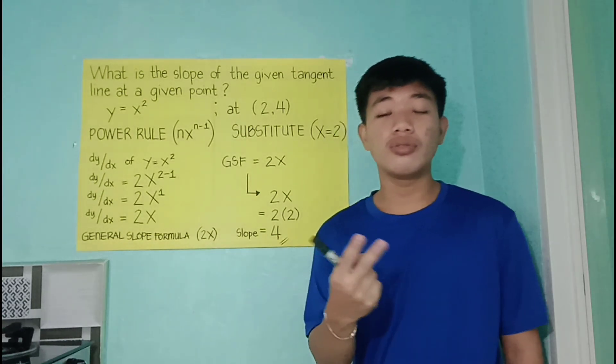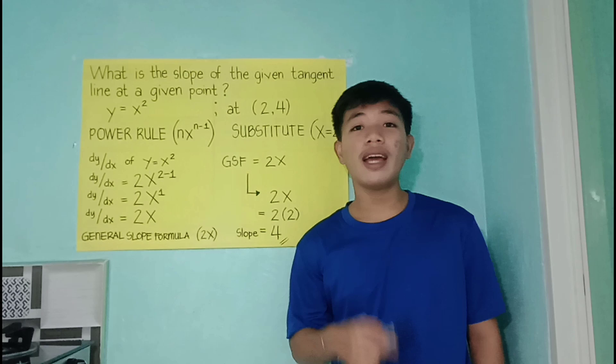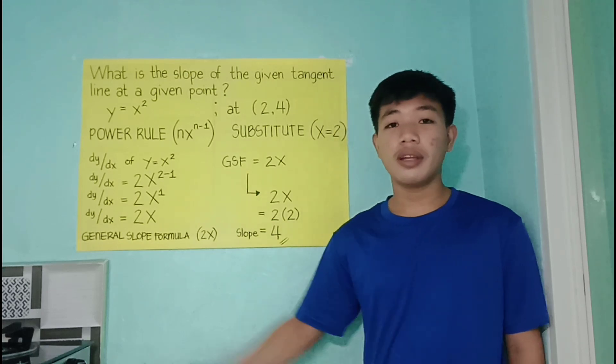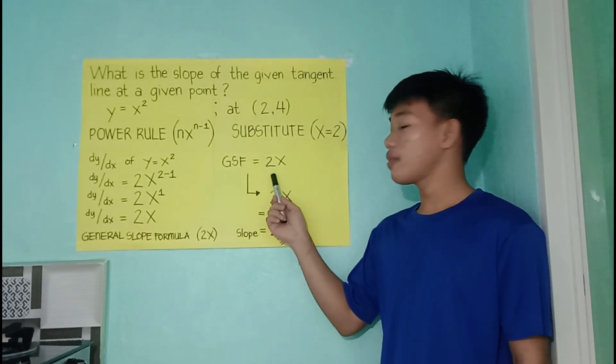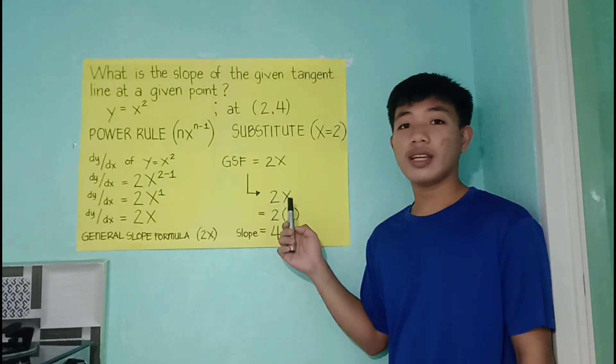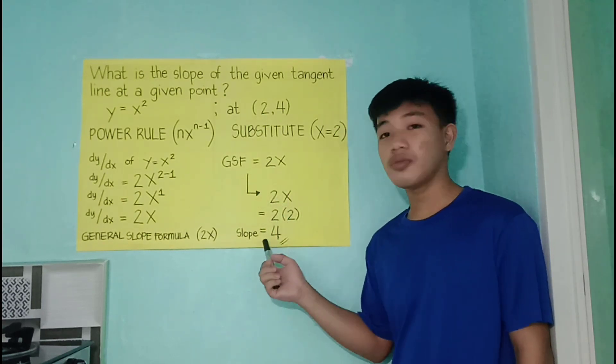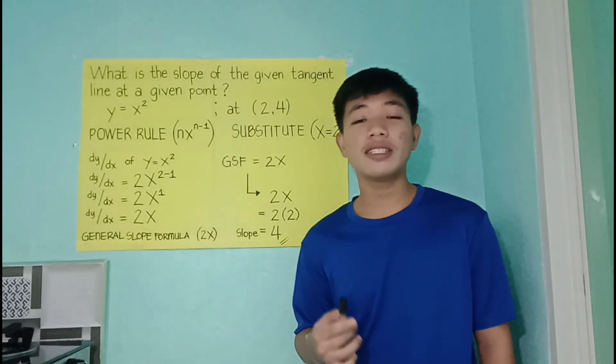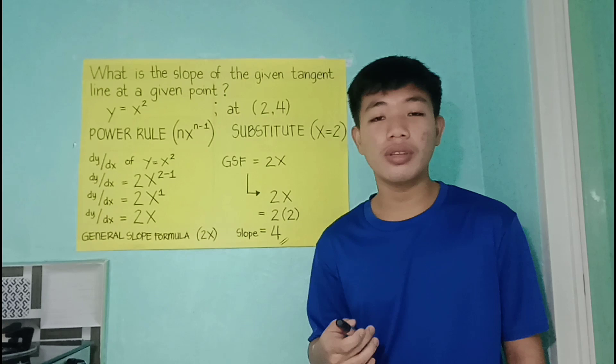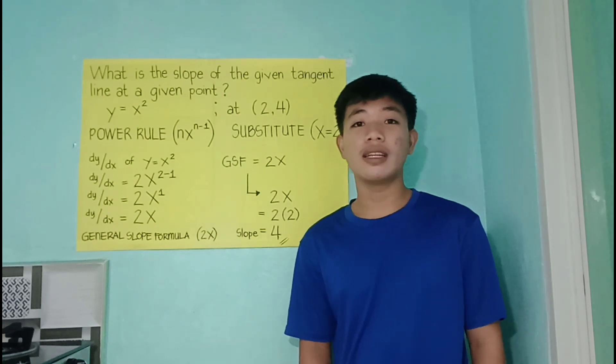The second thing to do is to substitute our x value to our general slope formula. So we'll have 2x. Substitute 2 to x will have 2 times 2 and the answer will be 4. Therefore, the slope of the tangent line y equals x squared at point (2, 4) is equal to 4.